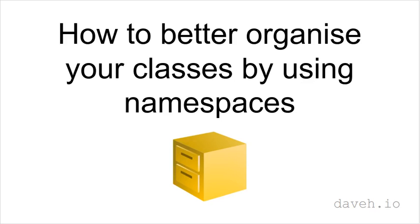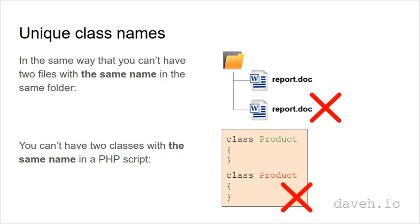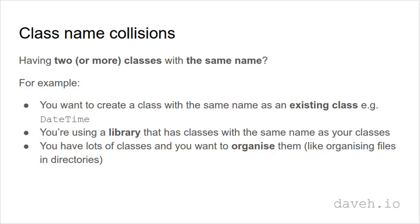How to better organise your classes by using namespaces. In the same way that you can't have two files in the same folder that have the same name, you can't have two classes with the same name in a PHP script. But what if you need to have two or more classes with the same name? For example, you're creating a class that has the same name as an existing class, or you're using a library that has classes with the same name as your own, or you just have lots of classes and you want to organise them, just like organising files in directories.